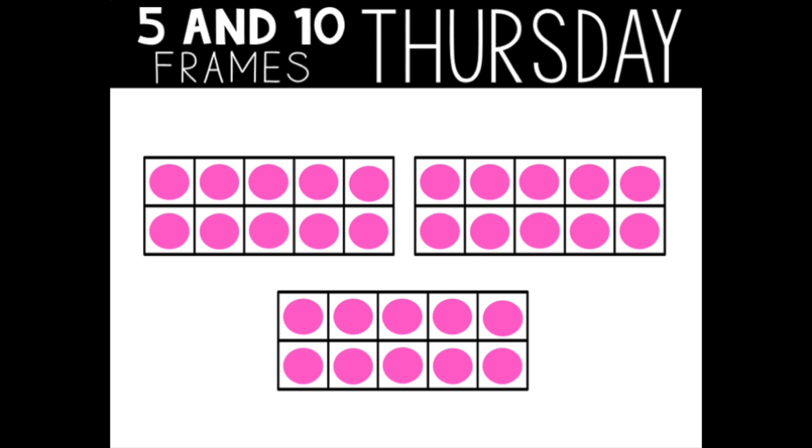I used the counting by tens strategy. I noticed all the 10-frames were full, so I counted by tens. 10, 20, 30. There are 30 dots in this image. What did you do to find your answer this time?